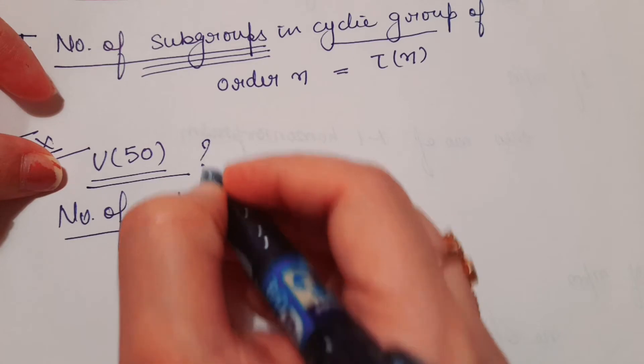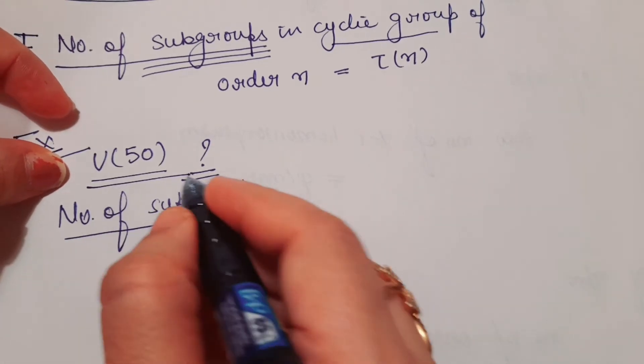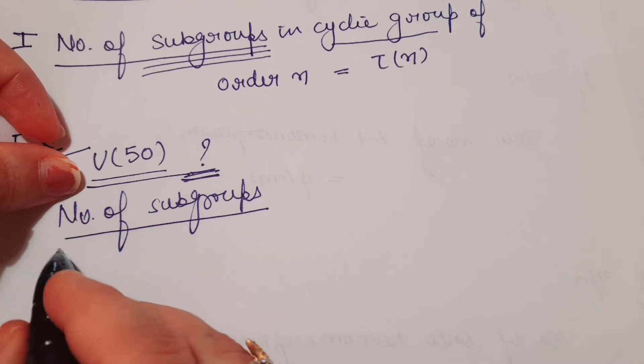You can watch my video in which I have shown three ways to determine if any U(n) group is cyclic or not. We discussed three methods there, so you can watch that video if you don't know. If you know U(50) is cyclic, then we will proceed. We need to find the number of subgroups.